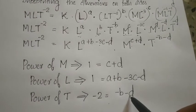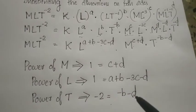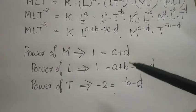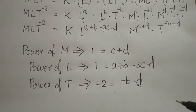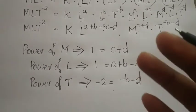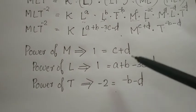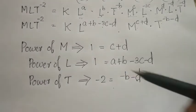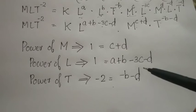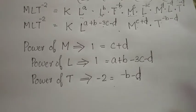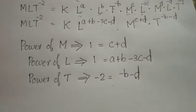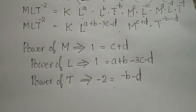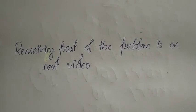We have four unknowns: a, b, c, and d, but only three equations. With three unknowns and three equations we can find the unknowns, but since there are four unknowns and three equations, it is not possible to find all values directly. So we will express three unknowns in terms of the fourth. We will continue this in the next video.